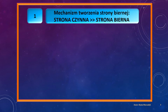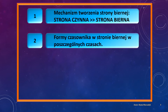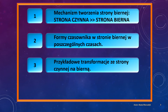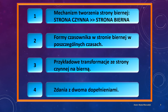Pokażę, jak strona czynna przechodzi w stronę bierną. W drugim odcinku skupimy się na formach czasownika — zrobię przegląd form czasownikowych w stronie biernej w poszczególnych czasach. Część trzecia będzie praktyczna: przedstawię przykładowe zdania, które krok po kroku będę przekształcała ze strony czynnej na bierną i powiem, na co trzeba zwracać szczególną uwagę, aby nie popełniać typowych błędów. W części czwartej zajmę się zdaniami z dwoma dopełnieniami, które można przekształcać na stronę bierną na dwa różne sposoby. Pora rozpocząć prezentację. Zapraszam do pierwszej lekcji.